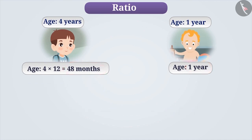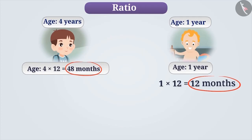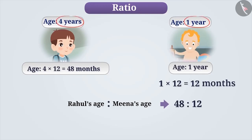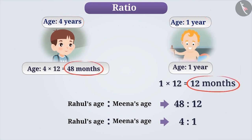Similarly, we can also get the ratio of their ages by converting the units into months. If we keep Rahul's age in months and express Meena's age too in months, we get both their ages in the same unit. Since the units are the same, we can find the ratio of Rahul's age to Meena's age as 48 is to 12. Now, when we kept the units in years the result was 4 is to 1, but when the units are kept in months we got 48 is to 12. Are both these ratios equal?